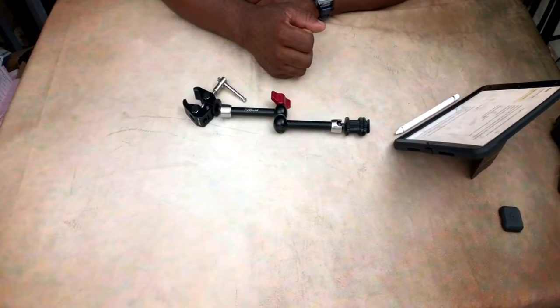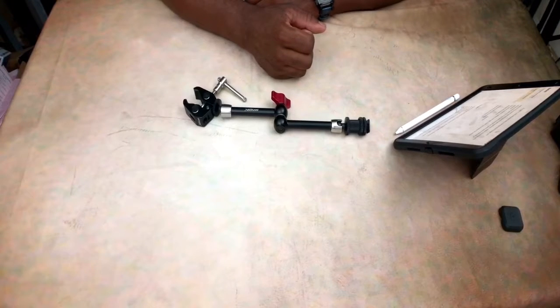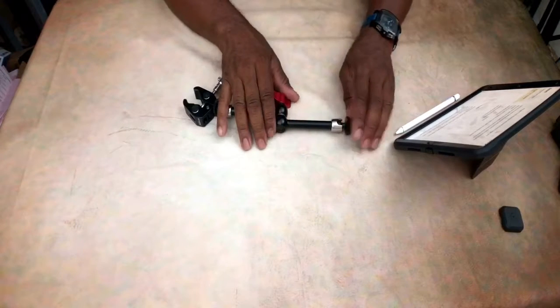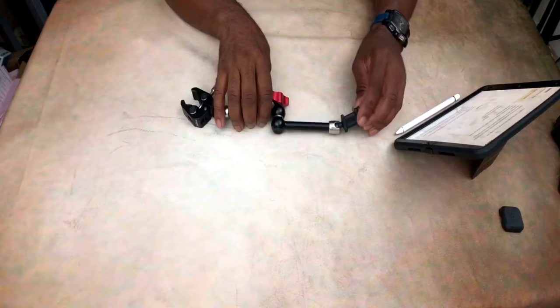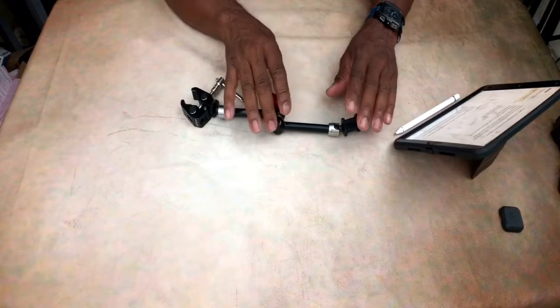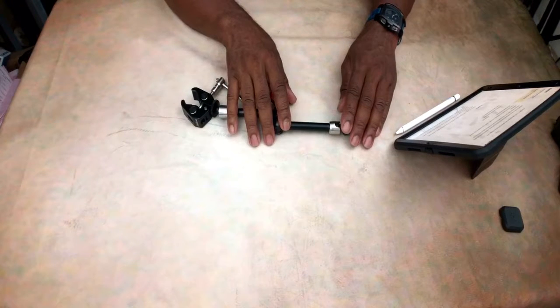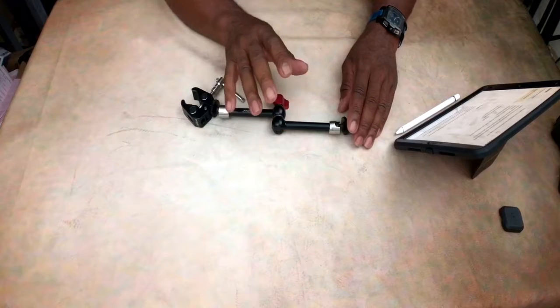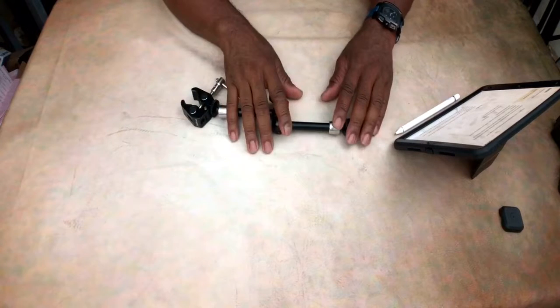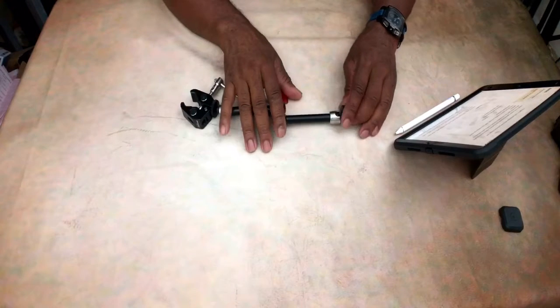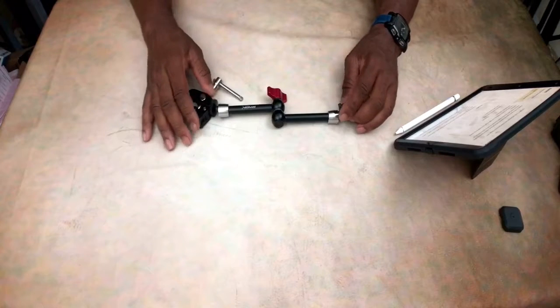Welcome back to the channel. Today we're going to be looking at the Pangshi 11 inch adjustable articulating friction magic arm - mouthful to say that three times. Basically, this is going to be an apparatus for filmmakers and photographers.